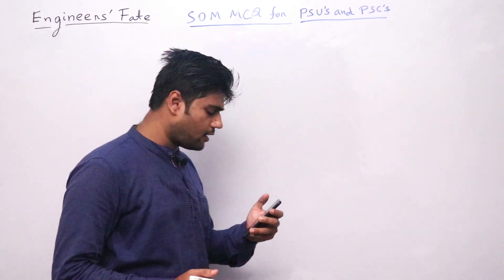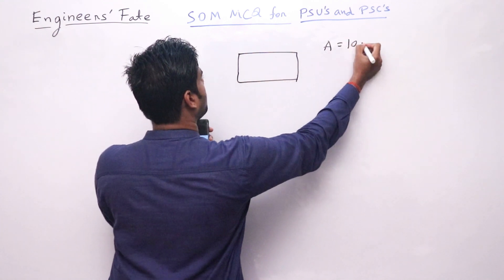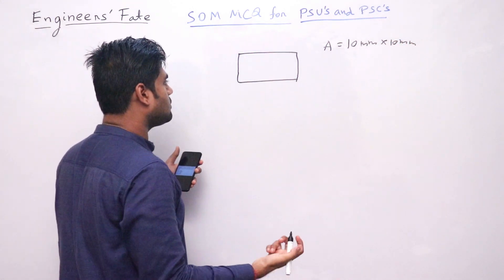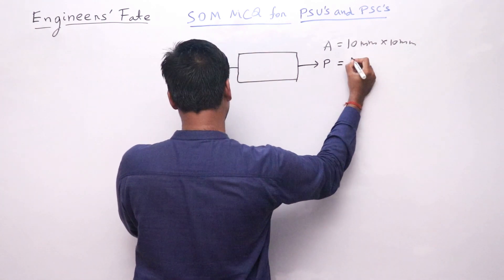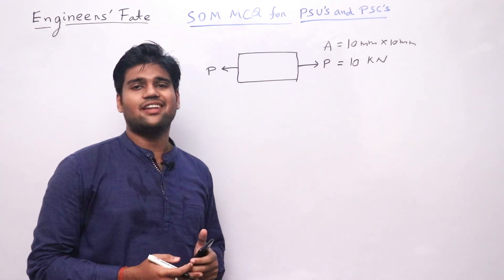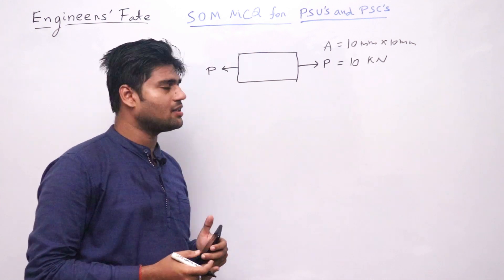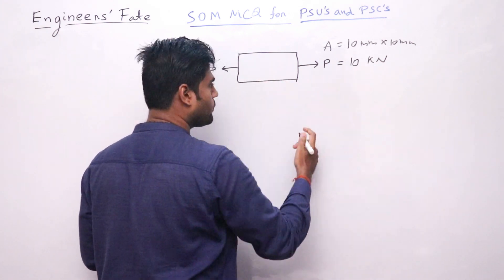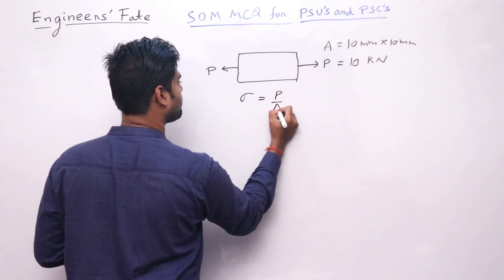In this question, a rod of cross-sectional area 10 mm by 10 mm is given, carrying an axial tensile load of 10 kN. The tensile stress developed — what is stress? Stress is resisting force divided by cross-sectional area. Whatever force this body is resisting due to an applied load of 10 kN. So we know that stress sigma equals P divided by A.